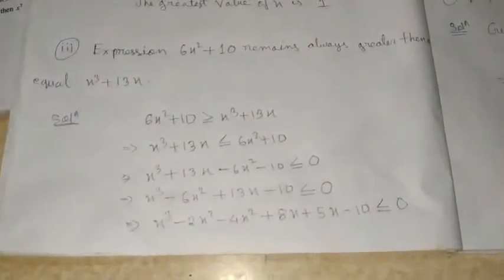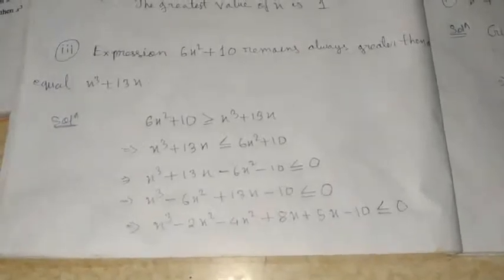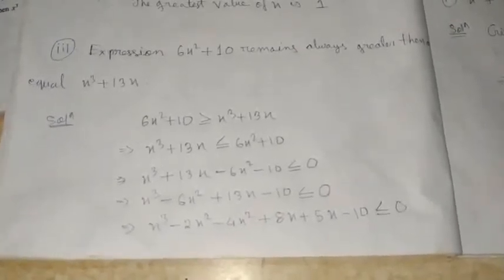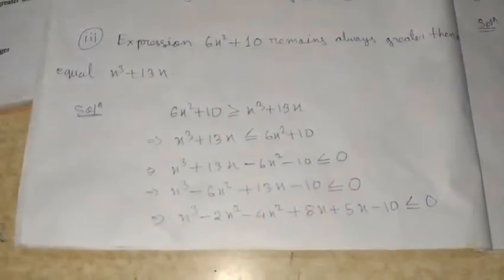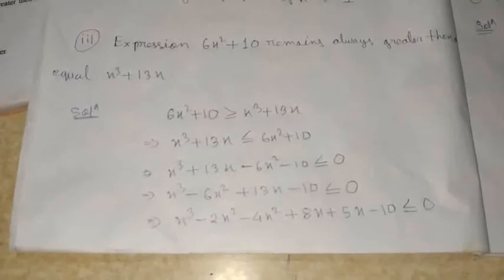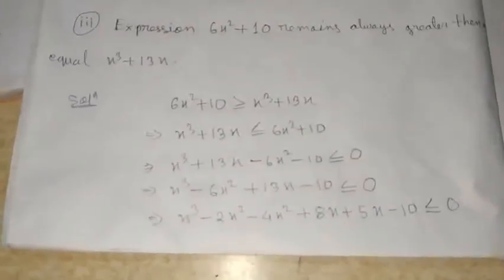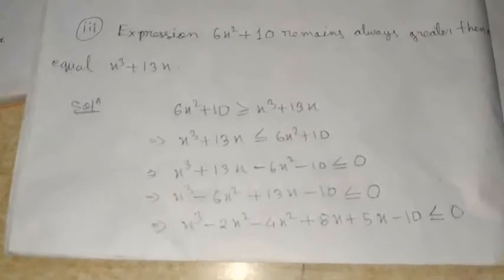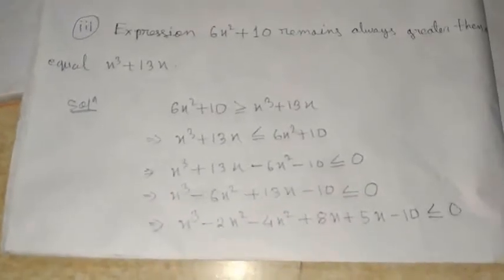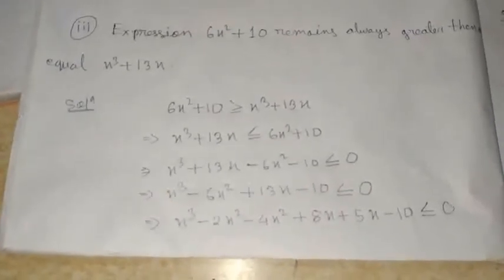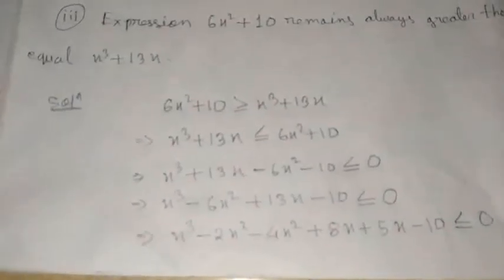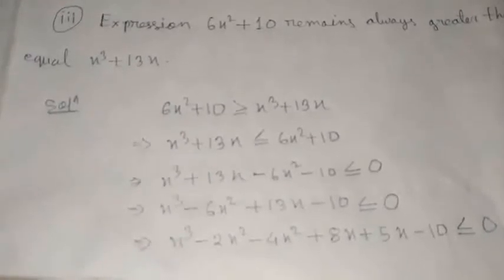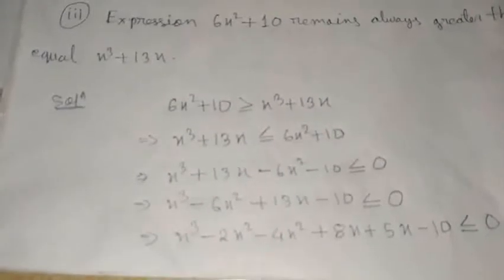The next question: the expression 6x squared plus 10 remains always greater than or equal to x cubed plus 13x. We are given 6x squared plus 10 greater than or equal to x cubed plus 13x. Rearranging: x cubed plus 13x minus 6x squared minus 10 less than or equal to 0.